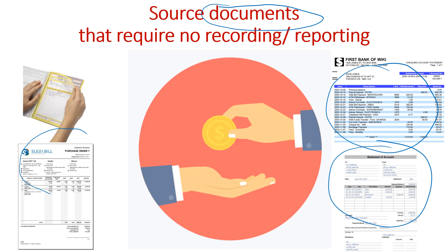A purchase order is basically a promise to buy some goods in the future, but no money is changing hands and no goods are changing hands yet. Therefore, we don't record or report anything until we get to that stage.